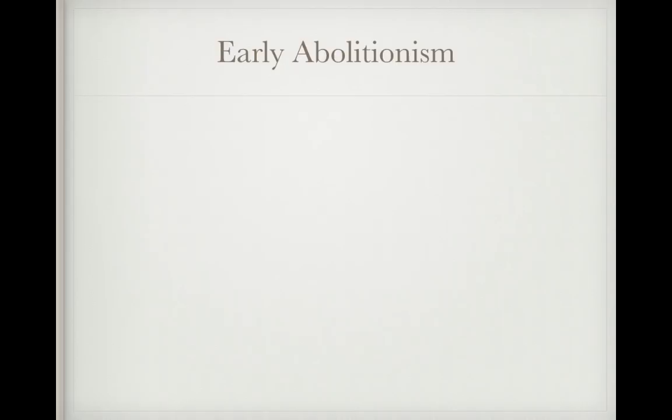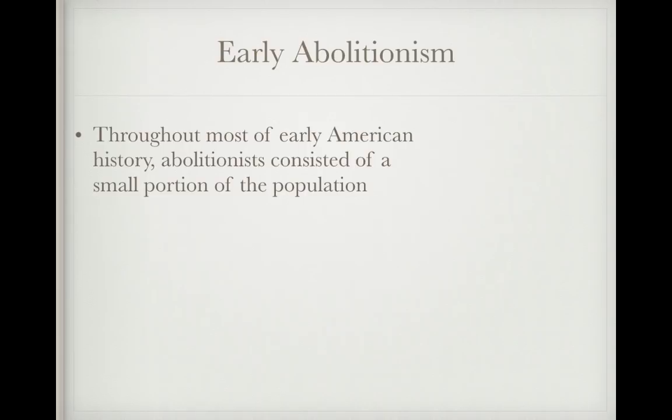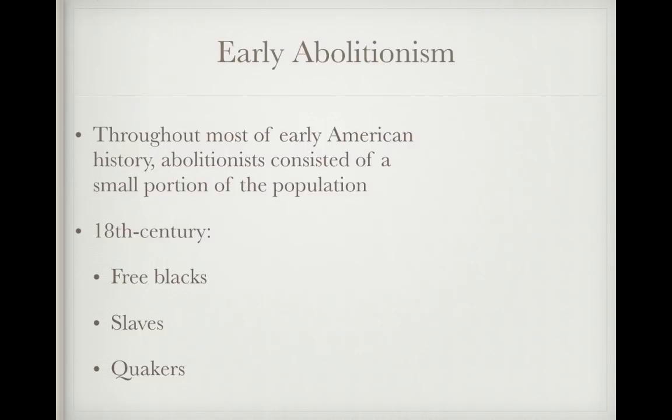Throughout most of early American history, abolitionists primarily consisted of a very small portion of the population. If you were an abolitionist in the 1700s, chances are you belonged to one of three groups: you would be a free African American, a slave, or a Quaker. Those are really the main abolitionists in the 18th century.